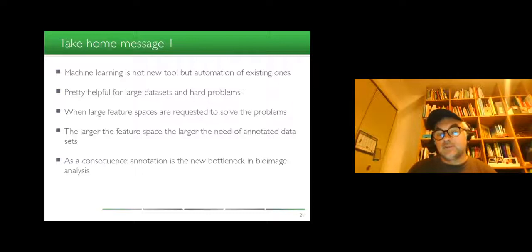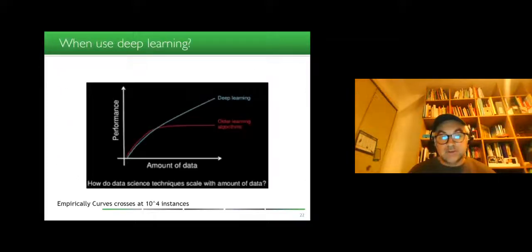So the first take-home message, if you are very beginners, is that machine learning is not a new tool but automation of existing ones. It's pretty helpful for large data sets and hard problems. If you have a simple problem with a single threshold that can do the job, please do it this way. And when large feature space are requested to solve the problem, the larger the feature space, the larger the need of annotated data sets as a consequence. Annotation is the new bottleneck in bioimage analysis.